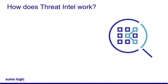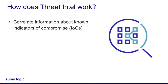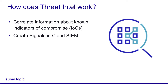So how does Threat Intel work? A Threat Intel database correlates information, such as a certain IP address, with known malicious activity. Because of this correlation, we can assume log messages with that IP address are more likely to be part of a real cyber attack. Cloud SIEM can automatically create a signal when it encounters a record that contains an indicator from the Threat Intel source.